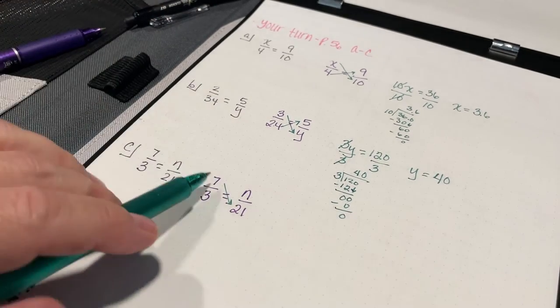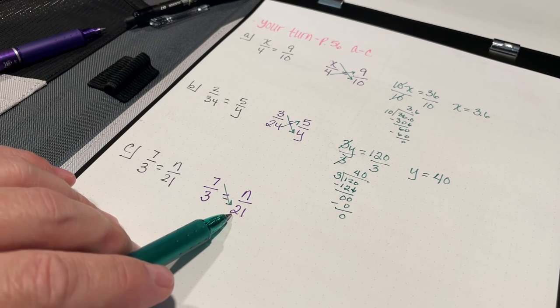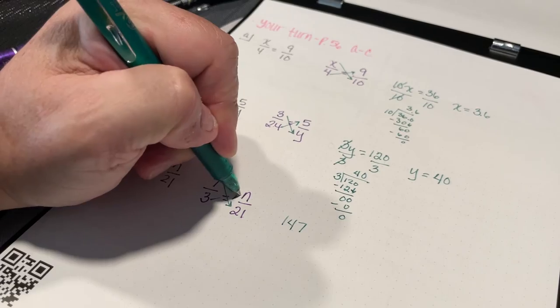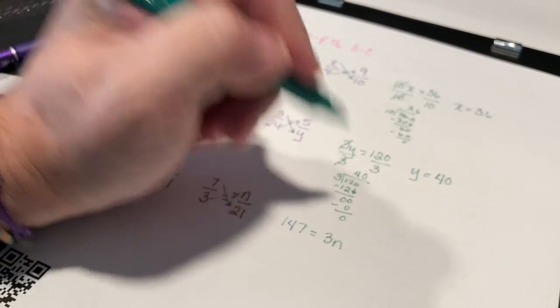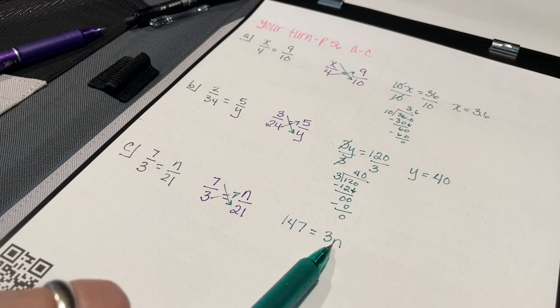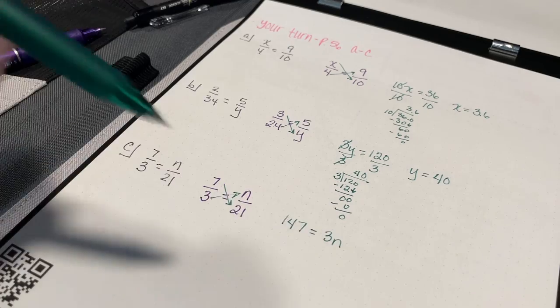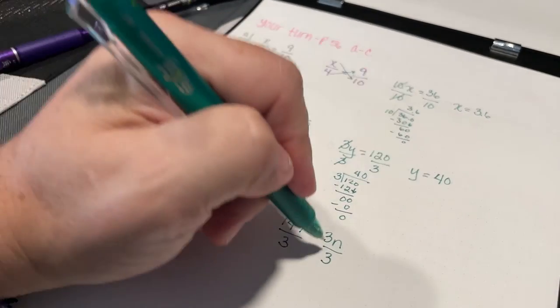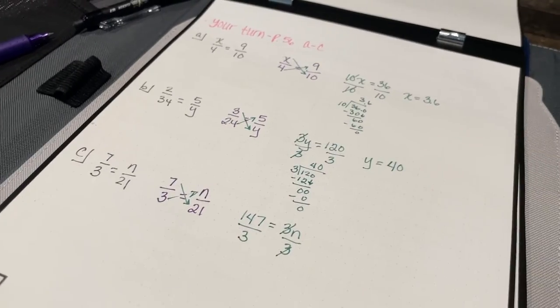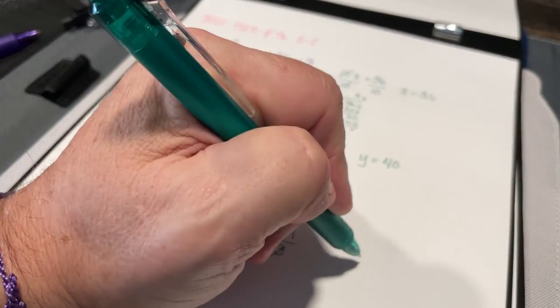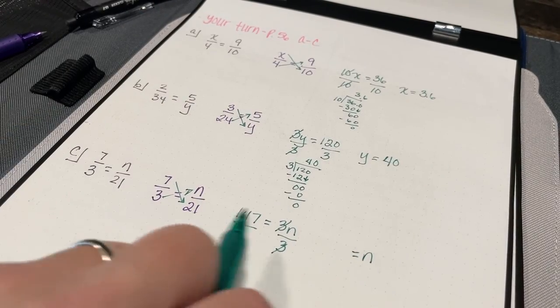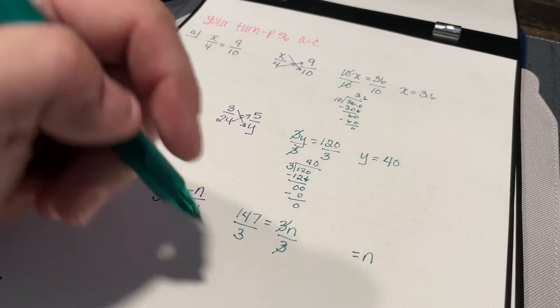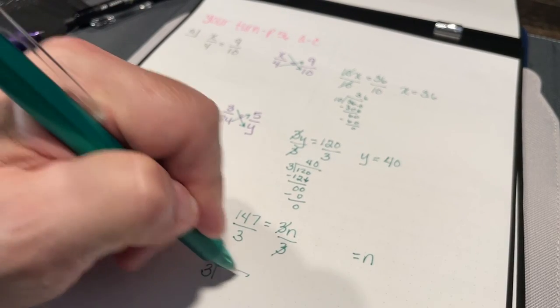So I'm going to go 7 times 21. 7 times 20 is 140, plus 7 times 1 is 7, so I have 147 equals 3 times n, so I get 3n. Now in the previous problems, my variable was on the left side of the equal sign. It does not matter. Since I'm multiplying n times 3, I want to divide it by 3. So now I'm going to get n equals, and I'm just going to write it the opposite way that the other ones are written, just because that's where my variable is. It's on the right-hand side, but it's still going to be the same thing.